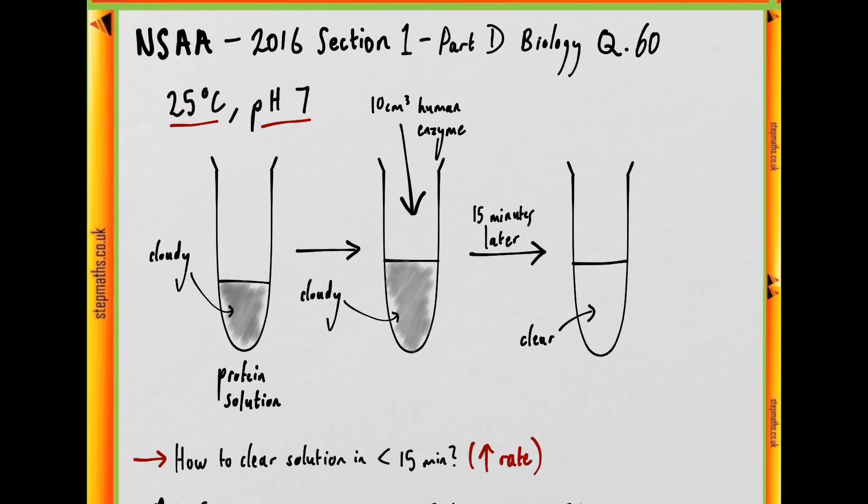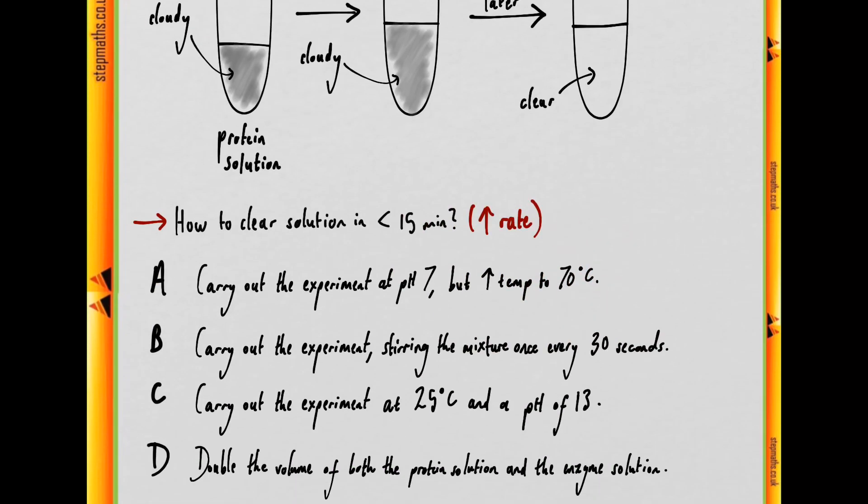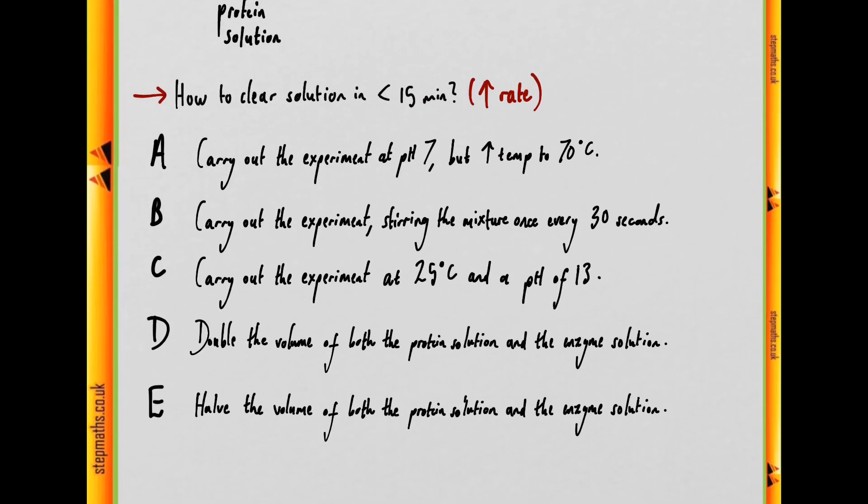Well, given that the enzyme works at 25 degrees, increasing the temperature to 70 would likely denature the enzyme. The kinetic energy of the bonds within the enzyme structure would be increased to the point where the bonds would start to break, and so the enzyme would not work as efficiently as it did before. So we can say this is wrong.